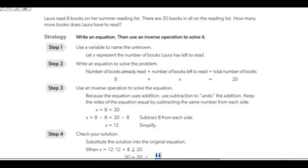Sometimes they're giving us real-world problems, such as the one that I'm going to read to you now. Laura read 8 books on her summer reading list. There are 20 books in all on the reading list. About how many more books does Laura have to read? So, the first thing we need to do is to write an equation. And we need to come up with a variable to name our unknown. Well, it's asking for how many more books does Laura have to read.